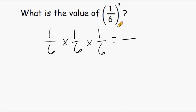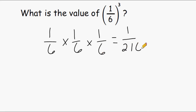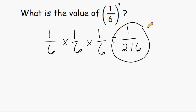So we just multiply the numerators together: 1 times 1 times 1, which is 1. And then the denominators together: 6 times 6 is 36, and 36 times 6 is 216. So 1/6 to the third power is 1 over 216.